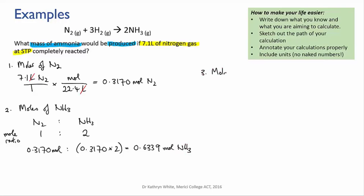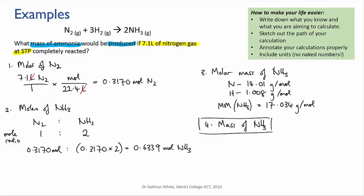Next, we need to convert moles of ammonia to a mass, so we need the molar mass of ammonia. We check the periodic table and we can calculate that the molar mass of ammonia, NH3, is 17.034 grams per mole. We take the moles of ammonia, multiply by the molar mass. The moles cancel out and that gives us 10.798 grams,